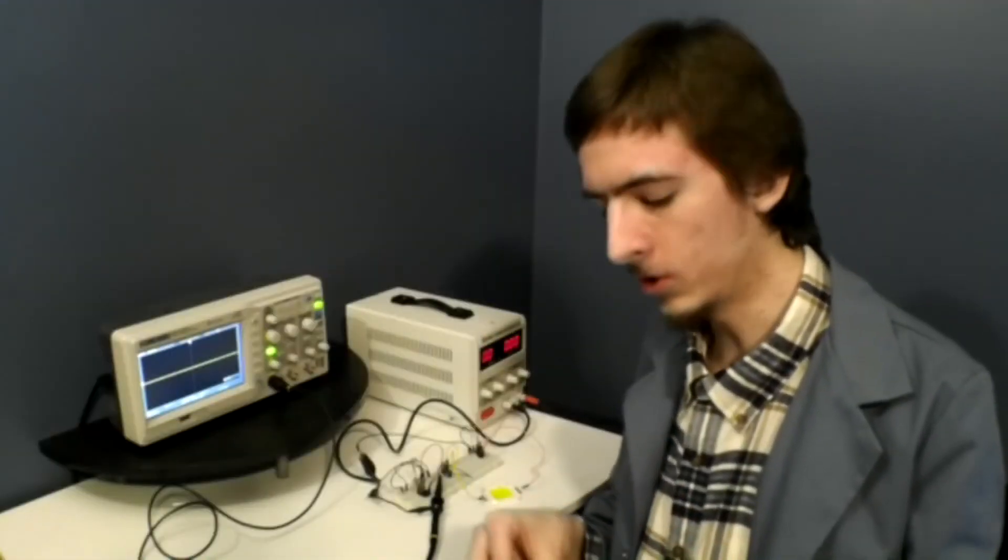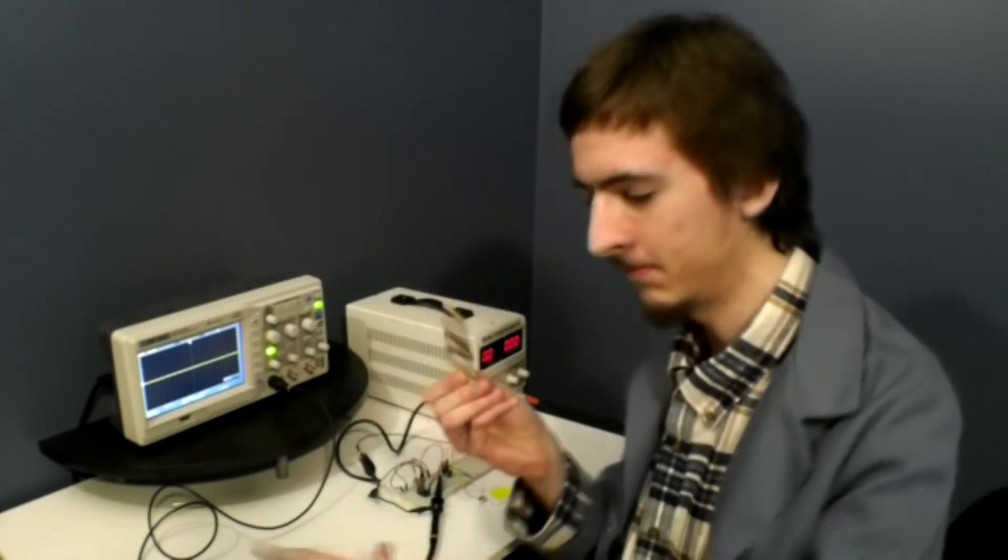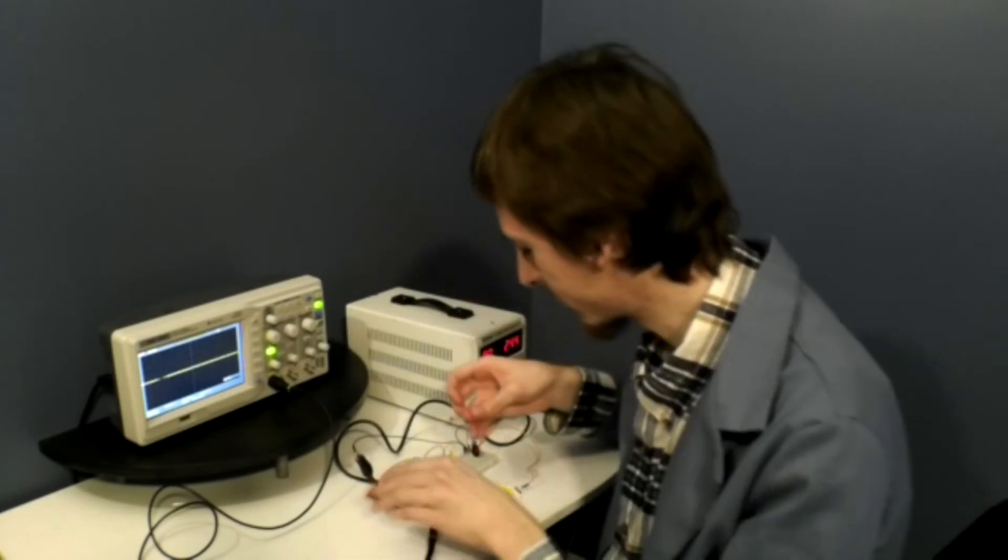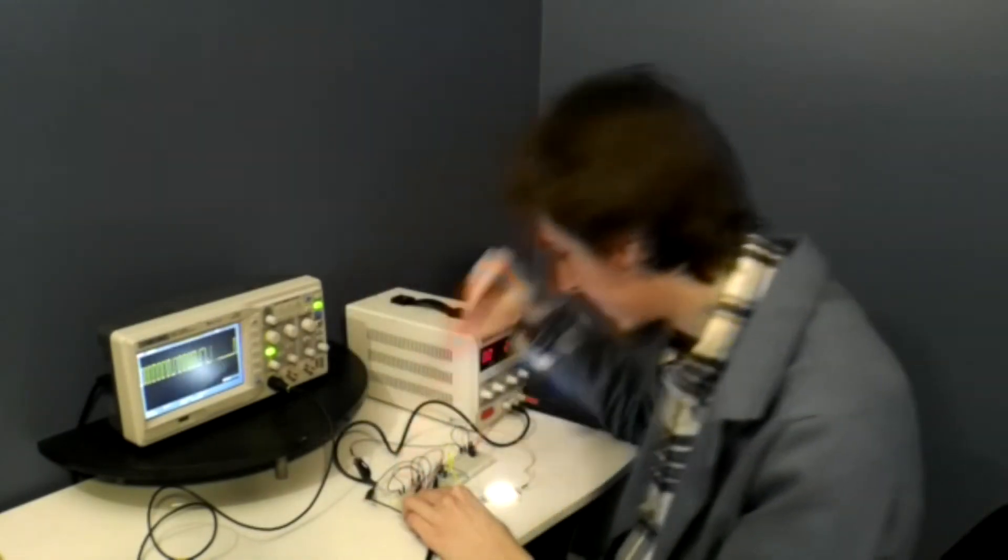Remember, to make it blink faster, all you need to do is replace RB in the 555 timing circuit. It's like magic!